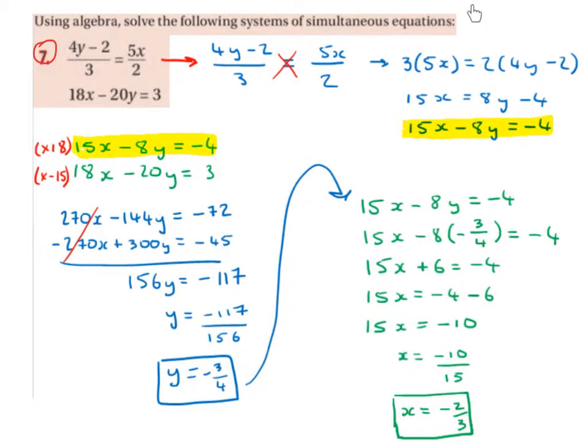It doesn't matter which way around you write these, so long as the top left fraction, the numerator on the left, is multiplied by the denominator on the right. And the top right, or the numerator on the right, is multiplied by the denominator on the left.